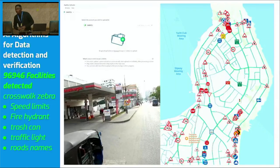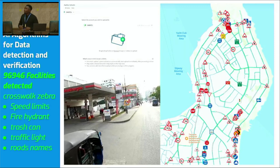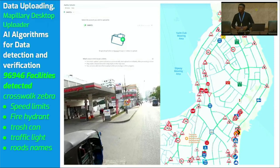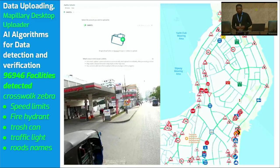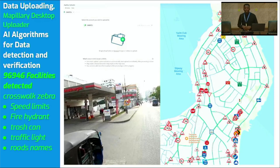After capturing those images, the next step is to upload them to Mapillary. The process of uploading images to Mapillary is very easy — like uploading an image to your Google Drive. You just use the Mapillary desktop uploader, select your images, and you only need internet — then the images will be uploaded automatically.